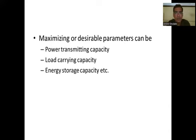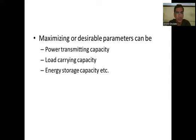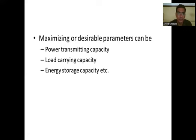Next are the maximizing or desirable parameters in optimum design. Power transmitting capacity comes under the maximizing or desirable parameters — our optimum design aims to maximize this. The second one is load carrying capacity, which should be improved for the equipment or manufactured product. The third is energy storage capacity of the equipment, which is also an important maximizing parameter.